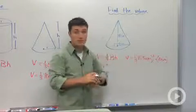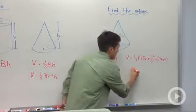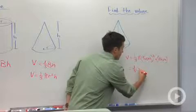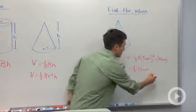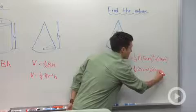So if we do five squared, that's going to be twenty-five. So we're going to have one-third times twenty-five square centimeters times ten centimeters.